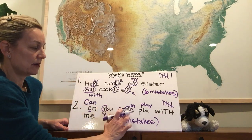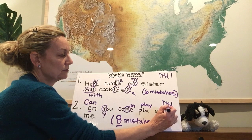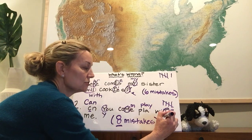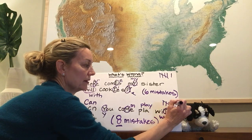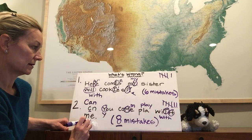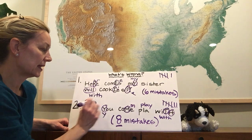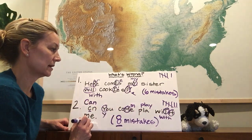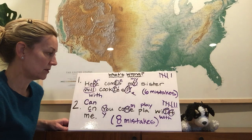Can you come play with — one, two. There's two uppercase there. One, two — with me. I think I'm done. Can you come play with me? But I only have seven. There's one more. Do you see it? What is it?